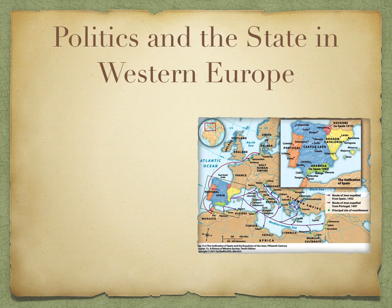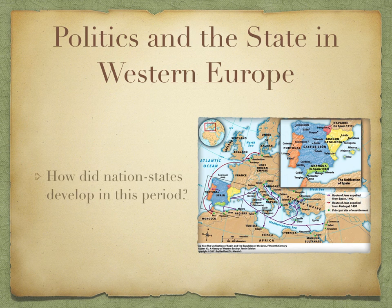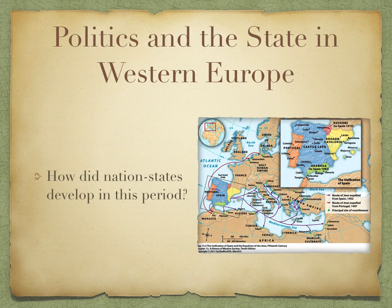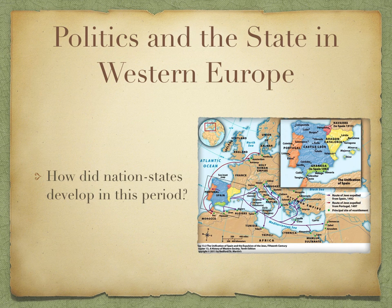Finally, the last section of the chapter is called Politics and the State in Western Europe — this is your international politics piece. The question McKay poses is: how did nation states develop in this period? One of the important things about the Renaissance is that this is where we begin to see modern nation states. The map of Europe begins to look a little bit like something we're familiar with — states like Spain, France, and England begin to take their modern shape. We'll talk about how they're developing, how they're beginning to centralize power, and how these new states interact with each other. There will be another online lecture going into this in much greater detail.